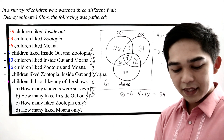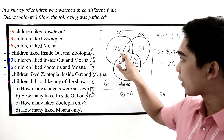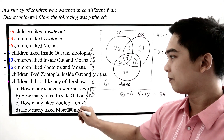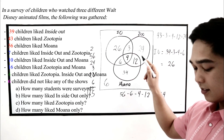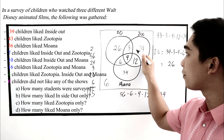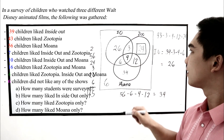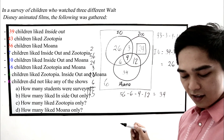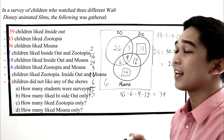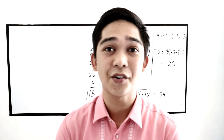How many like Inside Out only? There are 26. How many like Zootopia only? There are 24. And how many like Moana only? There are 34. That's how you solve using the Venn Diagram. That is your lesson 2.